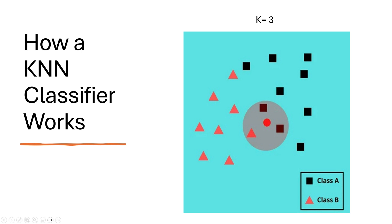We have all these red triangles and black rectangles, and then we have a new data point. To classify this new data point, we take the distance from this point to all the existing data points individually. Based on the distances, we choose the nearest neighbors. With K equals 3, we choose three nearest neighbors — here we have two blacks and one red, so black wins. We predict the new data as black rectangle.